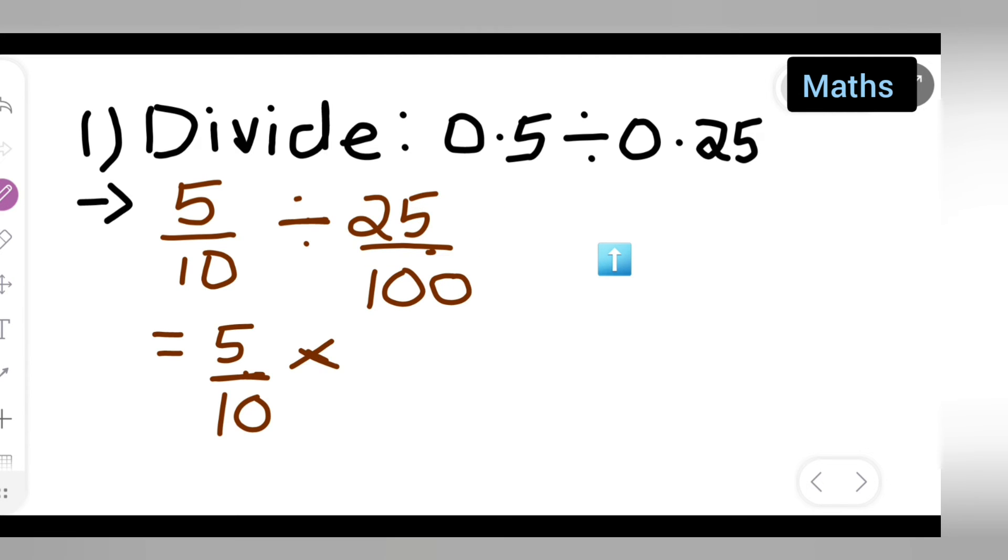Multiply and take the reciprocal. So it will be 100 upon 25, right?